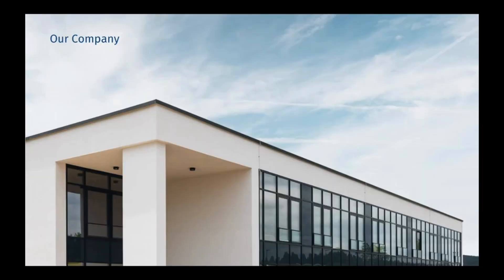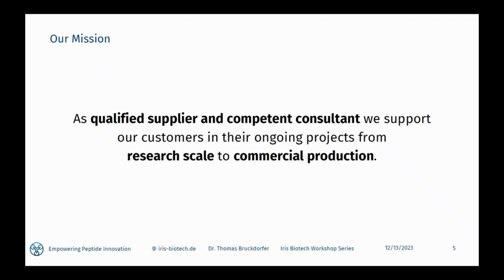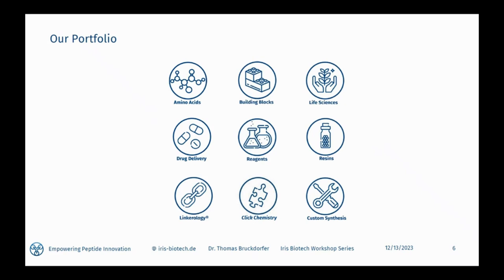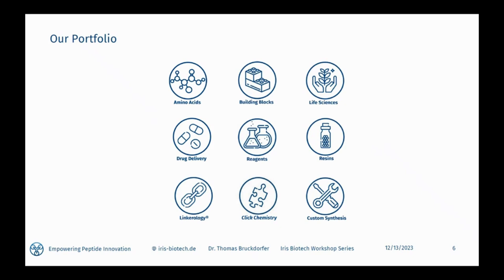Here is a picture of our company building, which we moved into in 2018. We understand ourselves as a qualified supplier and competent consultant to the biotech and pharmaceutical industry, and want to support our clients during design and execution of their projects — from early research through to pilot phase or even commercial productions. We are a market leader in unusual amino acids, and our main markets are reagents and building blocks for the design of peptides, including various modifications. Our drug delivery section contains polymers like PEG and polyamino acids used in LNPs — lipid nanoparticles used in the formulation of the latest mRNA vaccines.